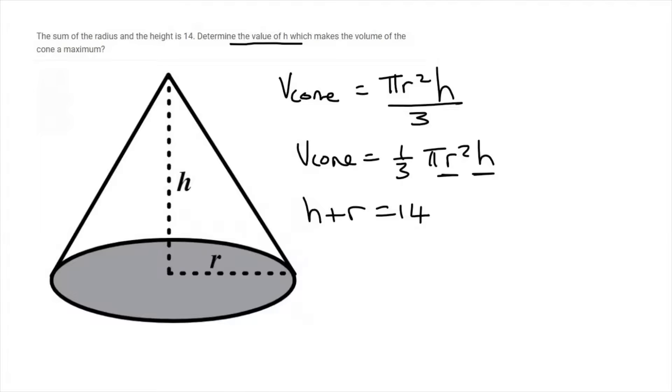But if you want to find h immediately, then what you should do is get r alone here. So r would be 14 minus h. And then you go put that r, you replace it over there. So then your formula will only have h's in it.